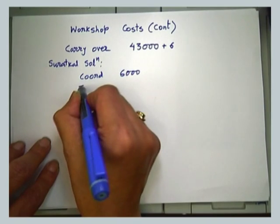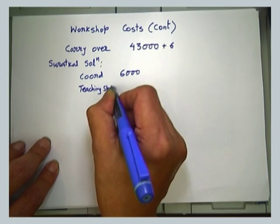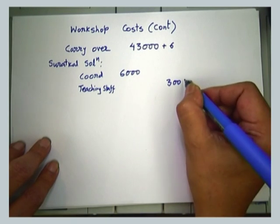So what you are saying is I have to add 6,000 rupees. We will call it the Surat Solution. For the coordinator it is 6,000 rupees, and for teaching staff who are going to help in the lab it is 300 rupees per day, and the session is a three-hour session — not one and a half hours — so 300 per day.